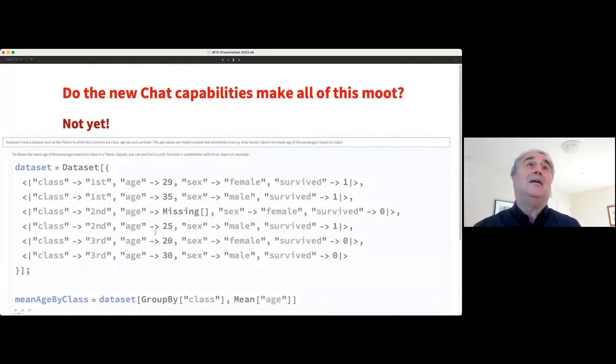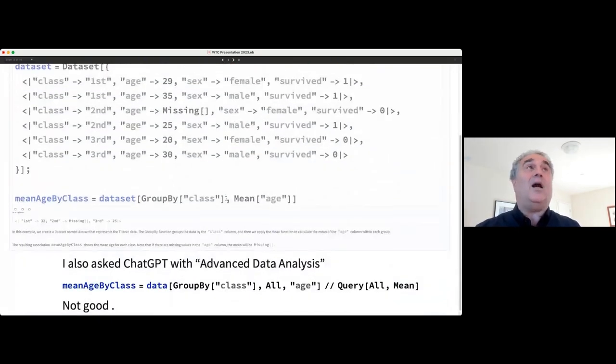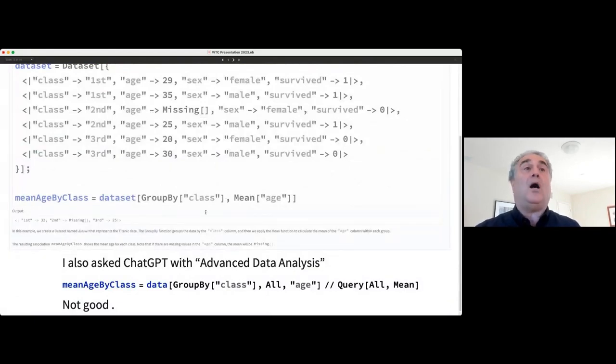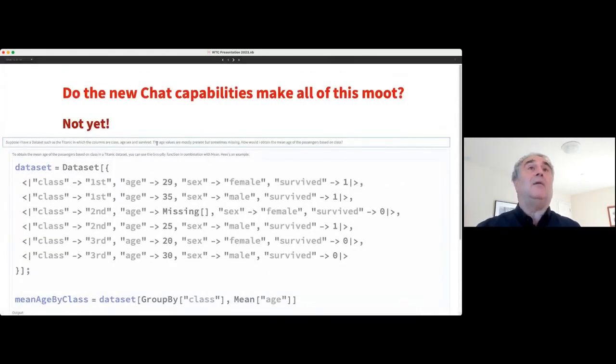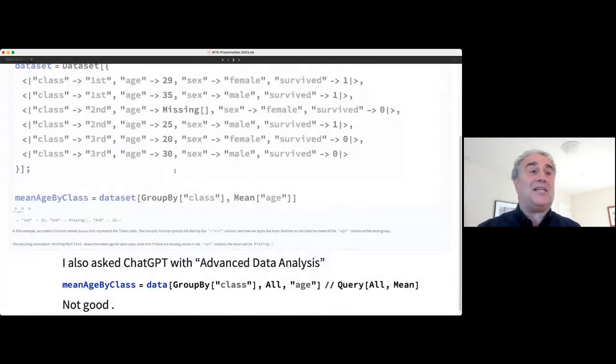And some of you might be thinking, this seems awfully complicated. Isn't the whole point of, you know, like this chat notebook thing that you don't have to do all this and I don't have to learn anything anymore. And the answer is not quite yet. It may be that in two or three years, you and I are completely obsoleted, but at the moment, the chat notebook was not able to do what I wanted, which was to group it by, what did I ask it to do? Right. How would I obtain the mean age of the passengers based on class? And at the moment it wasn't able to do that. I would be delighted in some sense, if a few years down the road, after my book has sold a lot of copies that Wolfram language was able to handle this directly through a chat interface.